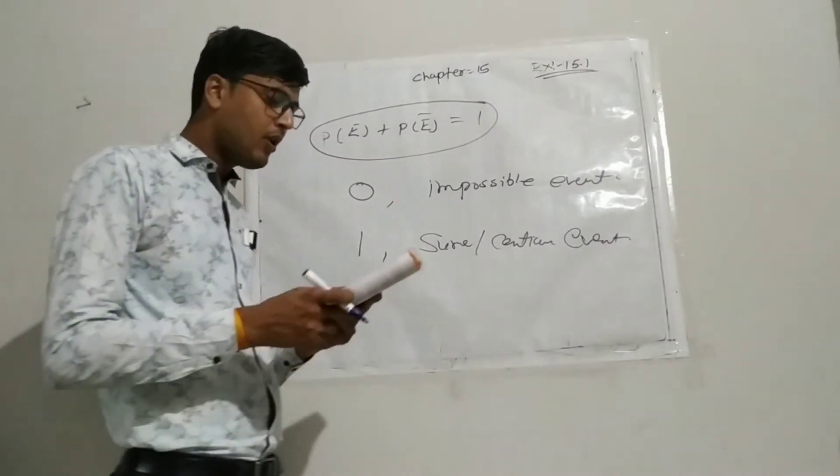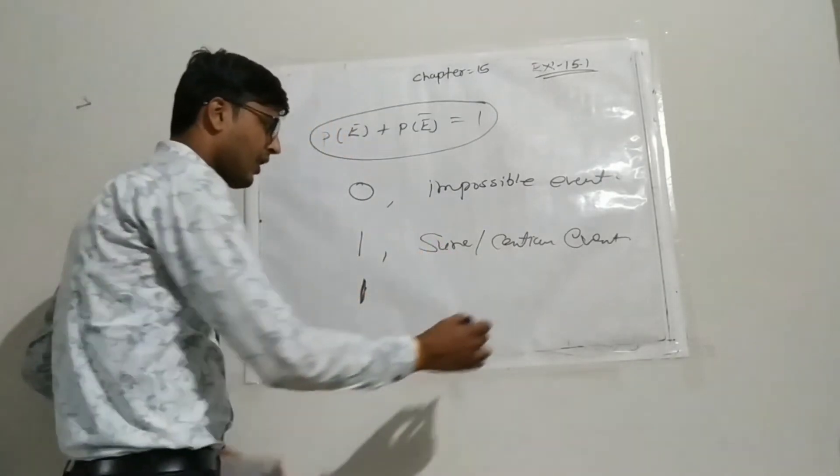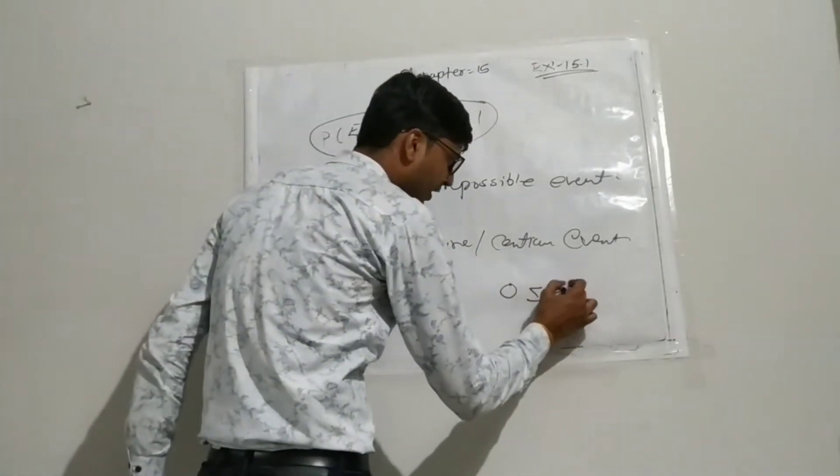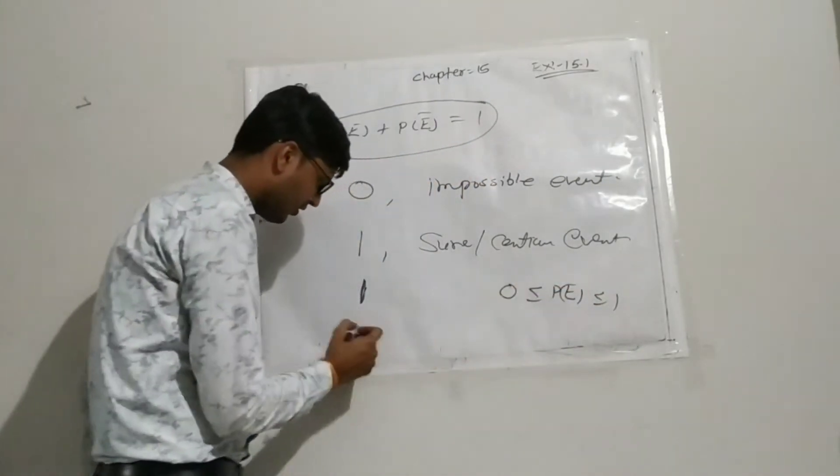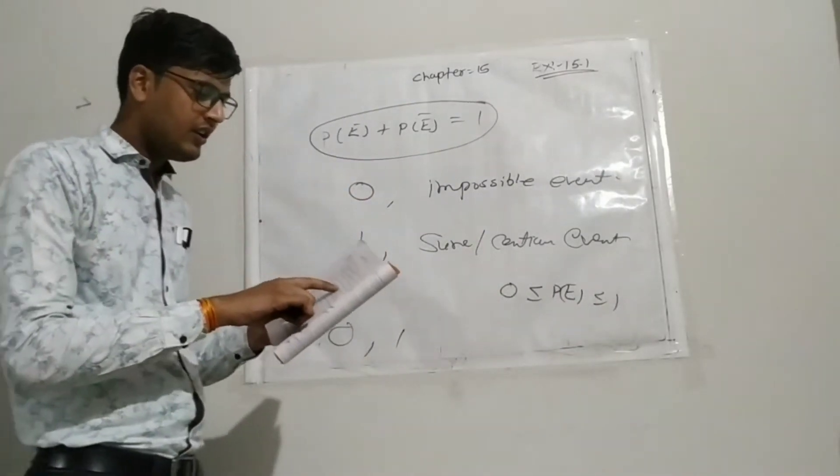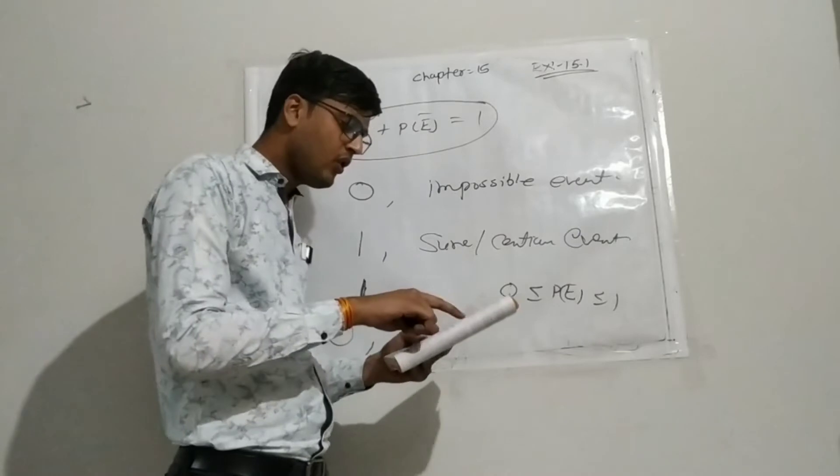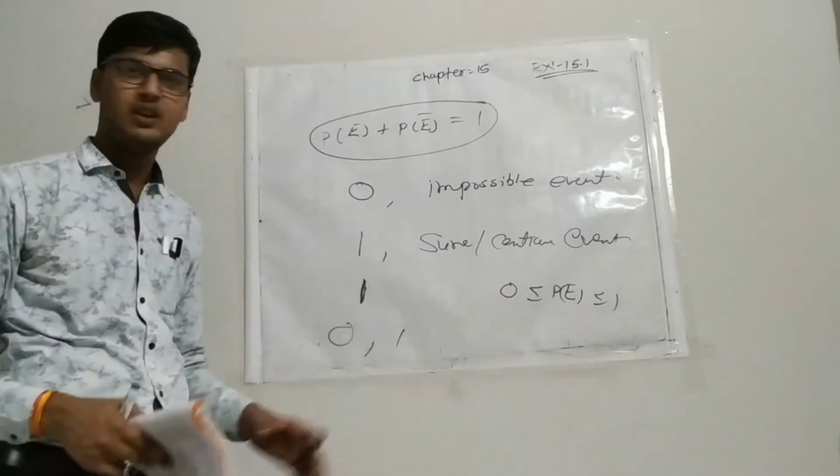Now fifth. The probability of an event is greater than or equals to. I explained probability always lies between 0 and 1. So this value is greater than 0 and less than 1. Greater than or equals to 0 and less than equals to 1. So this is our question number first.